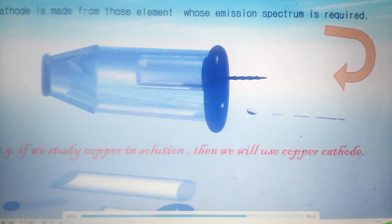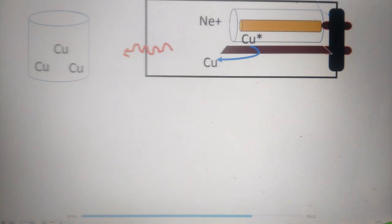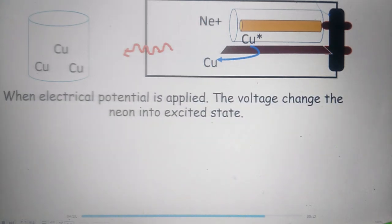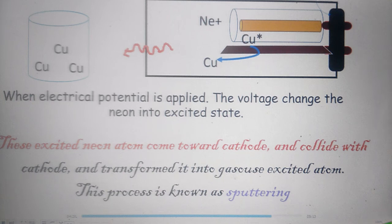If we study copper in solution, then we will use a copper cathode. Working principle: when electrical potential is applied, the voltage excites the neon into an excited state. These excited neon atoms move toward the cathode, collide with it, and transform it into gaseous excited atoms — a process known as sputtering. In the excitation process, specific wavelengths are emitted which are used in the analysis.